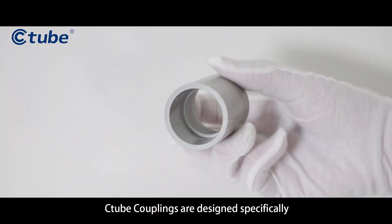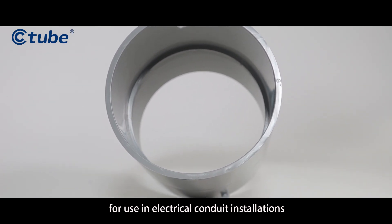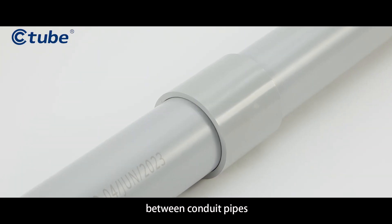C-Tube Couplings are designed specifically for use in electrical conduit installations, providing a secure and reliable connection between conduit pipes.